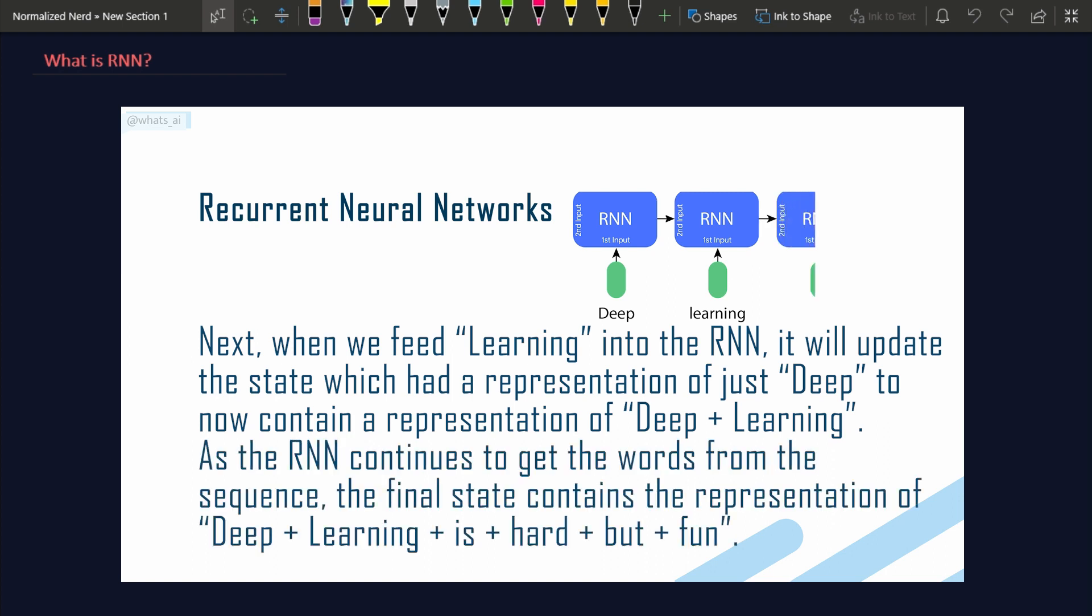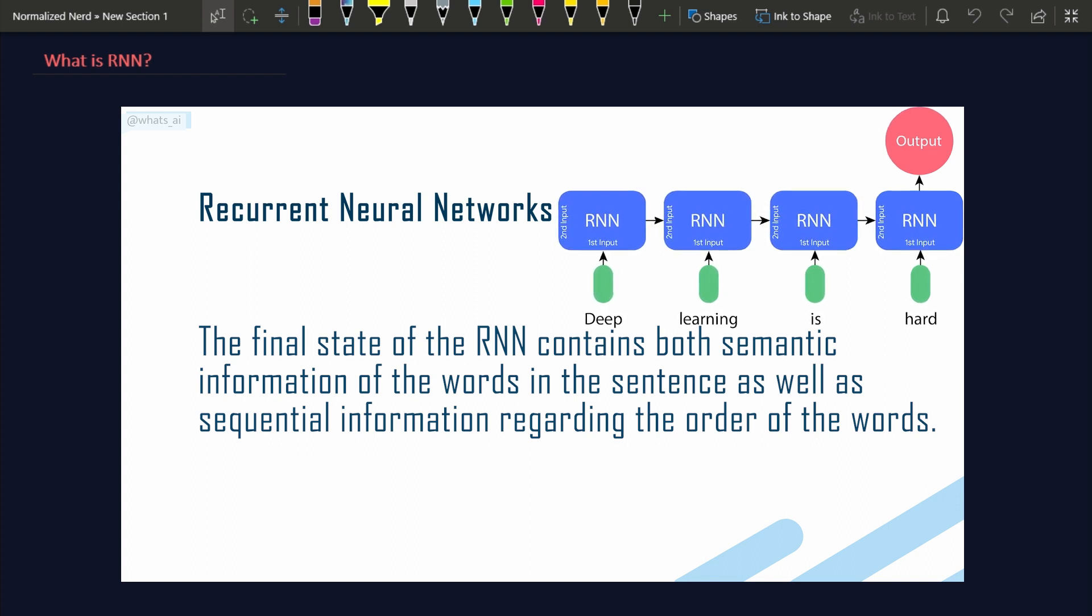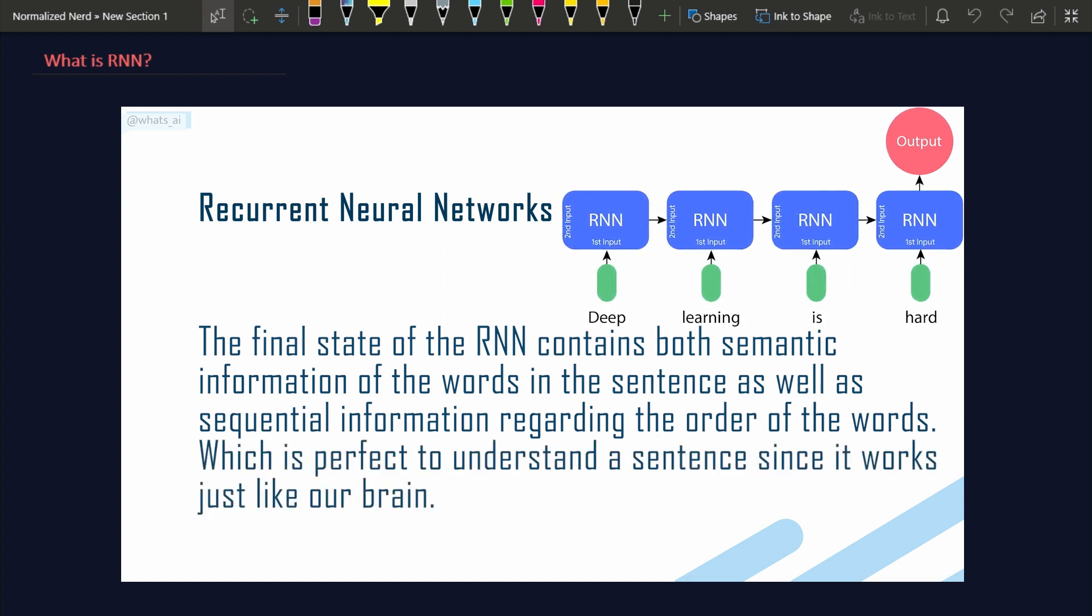As the RNN continues to get the words from the sequence, the final state contains the representation of 'deep learning is hard but fun'. The final state of the RNN contains both semantic information of the words in the sentence as well as sequential information regarding the order of the words, which is perfect to understand a sentence since it works just like our brain.